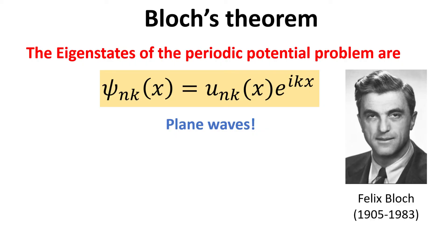Bloch's insight solves the important question of why not all crystalline materials are highly resistive, with electrons colliding every few angstroms — the typical spacing between ions composing the crystal. Instead, electrons travel effectively as plane waves in a crystal, as if in vacuum. Electrons in crystals are only scattered, for example, by defects or impurities in the crystal lattice, not by the lattice itself. Because impurities and defects are much more sparse than the ions in crystals, electrons can travel much farther than one would expect.